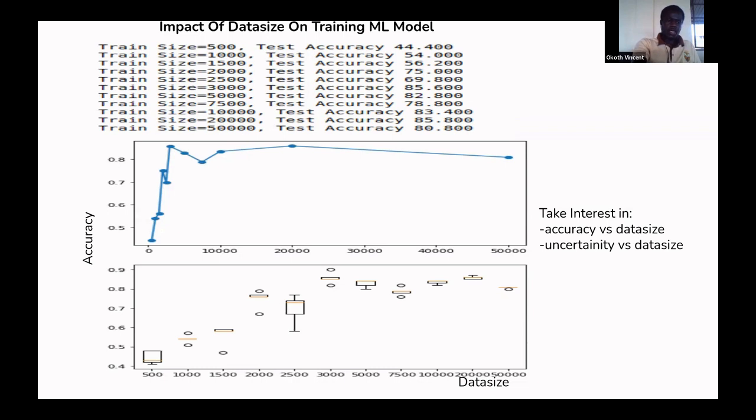As you increase data size, accuracy increases sharply until a point of diminishing returns where increasing the size means the model is not learning anymore. This comes with one advantage: even if you increase the data size and accuracy may not be increasing, the certainty and reproducibility of your results is higher if you use larger data sets.